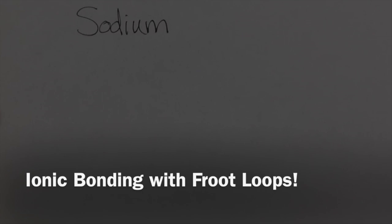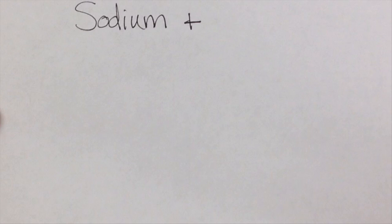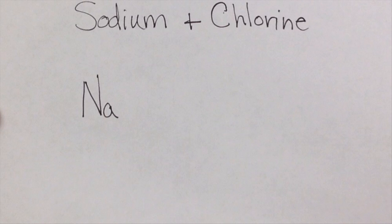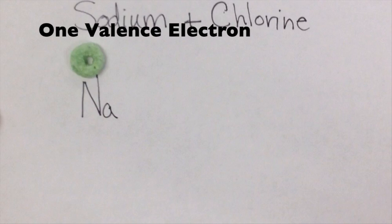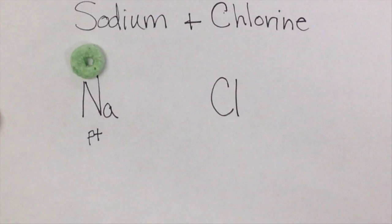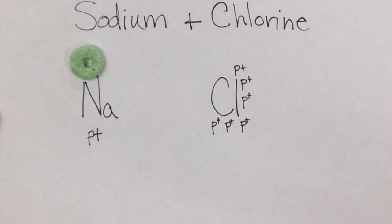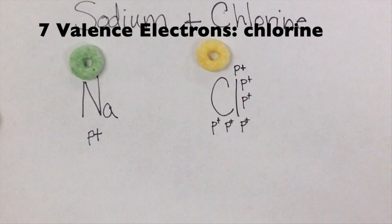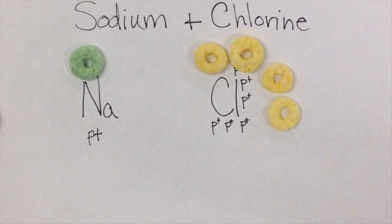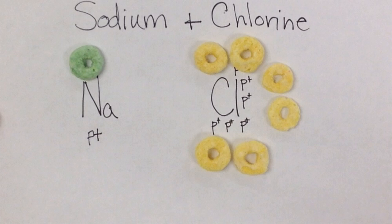Time for fun with Froot Loops and some ionic bonding. Start with a sodium atom with its one valence electron and a chlorine atom with its seven valence electrons. I added the protons just so you could see the positive charges that are also there.